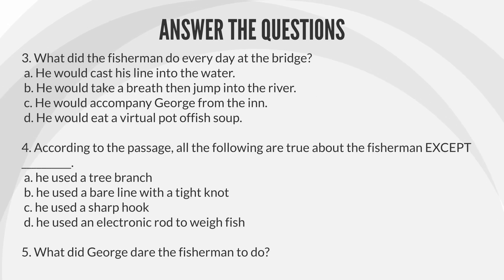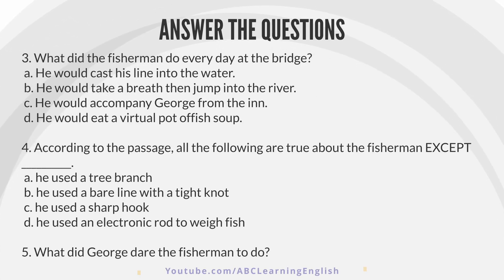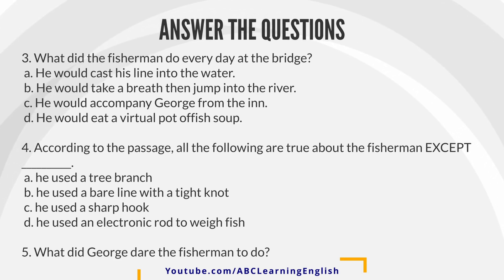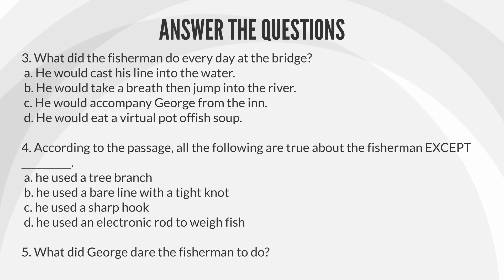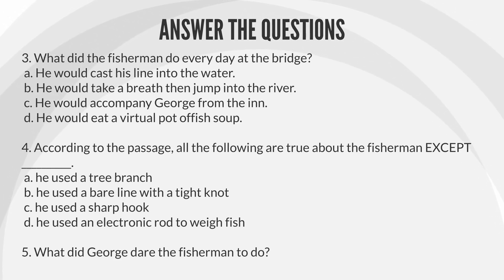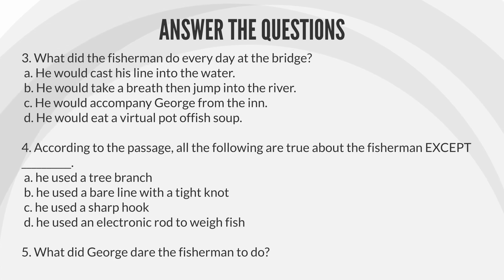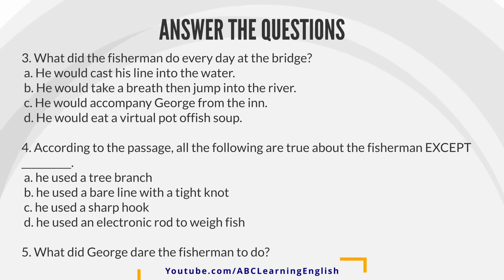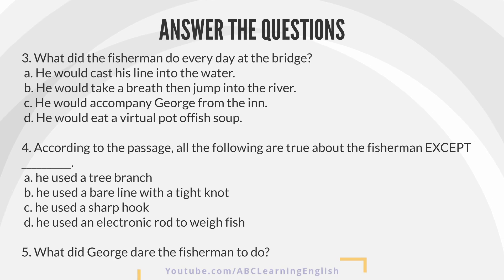Question 3: What did the fisherman do every day at the bridge? A. He would cast his line into the water. B. He would take a breath, then jump into the river. C. He would accompany George from the inn. D. He would eat a virtual pot of fish soup.